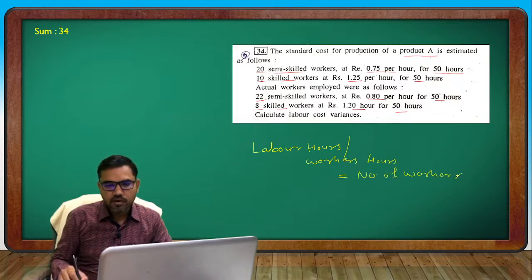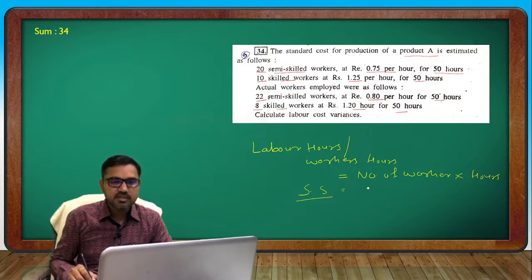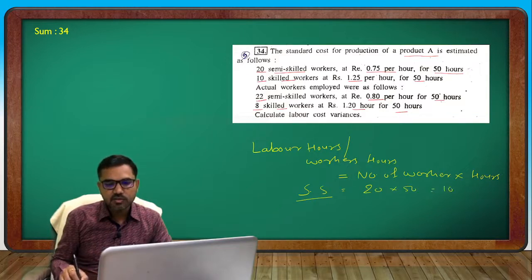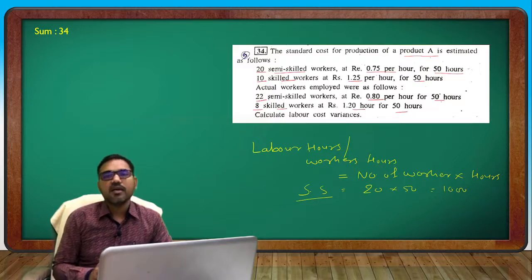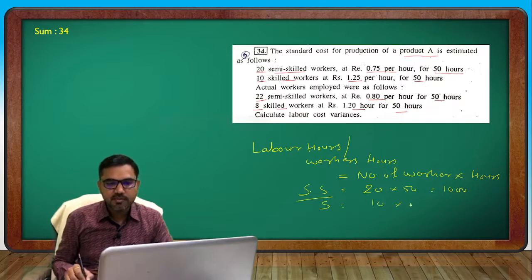Semi-skilled workers: 20 workers into 50 hours to work = 1000 hours. Skilled workers: 10 workers into 50 hours to work.